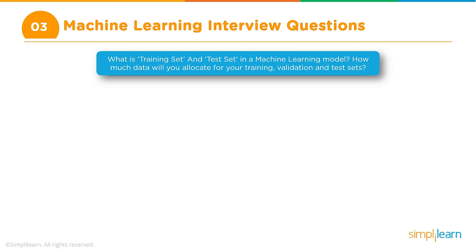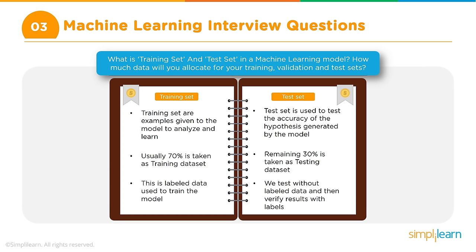The next question is around training and test sets. When performing machine learning training, we split data into training and test sets. We have a three-step process: train the model, test the model, and once satisfied, deploy the model. You have labeled data — say, a thousand records — and you need to decide how to split it.